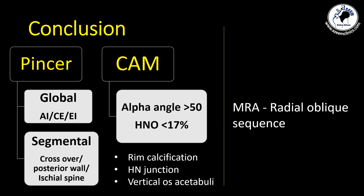In conclusion, for the radiographic diagnosis of femoroacetabular impingement: for pincer, look for global overcoverage using the extrusion index, the center-edge angle, and the acetabular index. For segmental overcoverage, look for a crossover sign indicating anterior overcoverage, and if accompanied by a posterior wall sign or ischial spine sign, that indicates acetabular retroversion. For CAM, look for the alpha angle in any view — greater than 50 degrees indicates CAM. Rim calcification, os acetabuli, vertical fracture, and a cyst at the head and neck junction are additional signs. MRI is the investigation of choice; high-resolution MRI combined with intraarticular gadolinium injection using the radial oblique sequence will give proper delineation of both the bony and soft tissue anatomy.